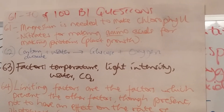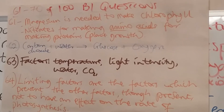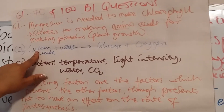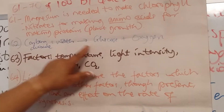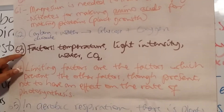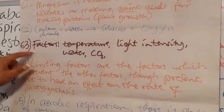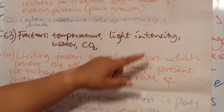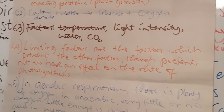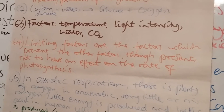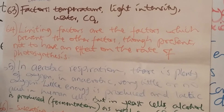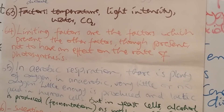Question 62: the formula for photosynthesis is carbon dioxide plus water — food is made in the form of glucose, and oxygen gas is given off. The factors that affect the rate of photosynthesis are temperature, light intensity, water, and CO2. When light intensity is high and CO2, water, and temperature are in the right proportion, the rate of photosynthesis will speed up.